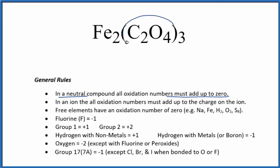C2O4 is the oxalate ion and the whole thing has an ionic charge of two minus. If we have an ion, all the oxidation numbers add up to the charge on the ion. So if you add up all these oxidation numbers, they're going to add up to this two minus.